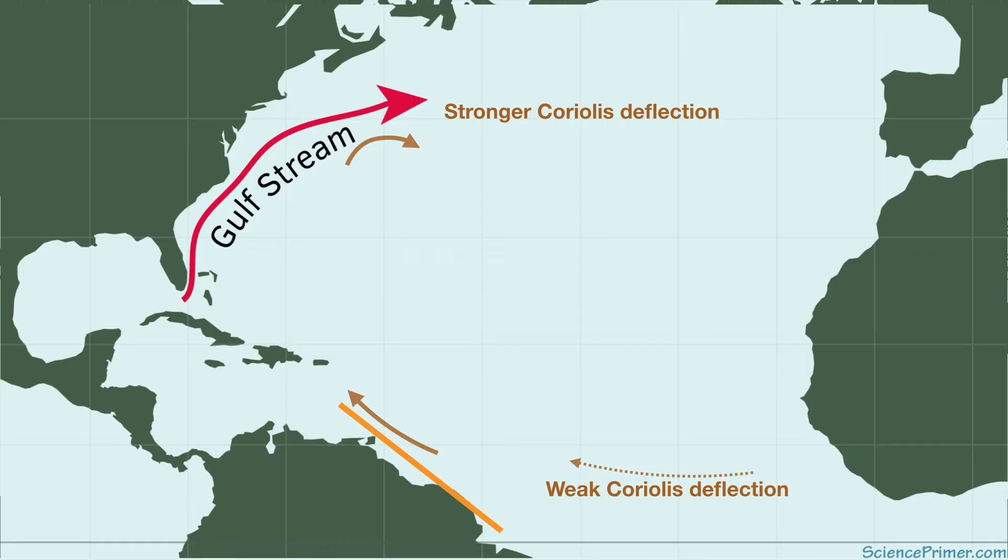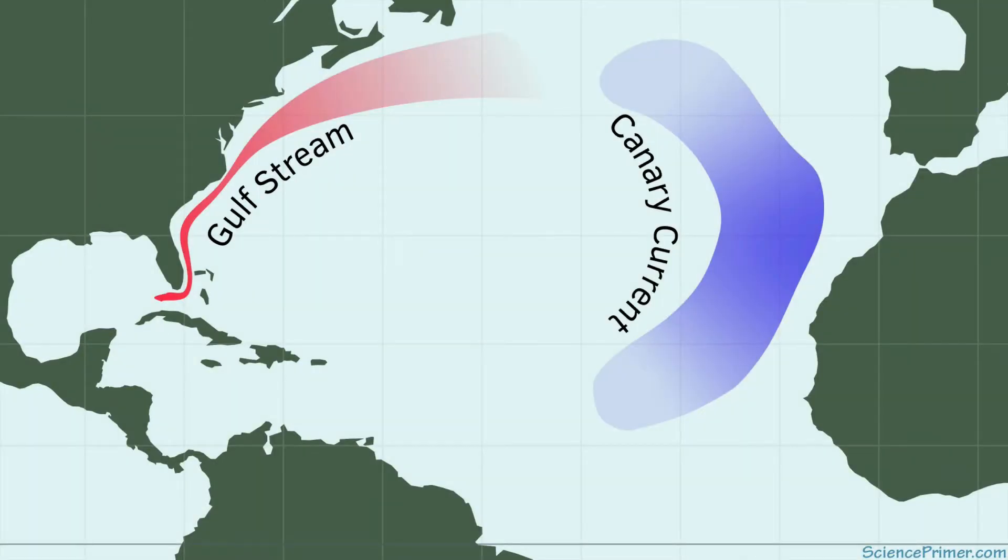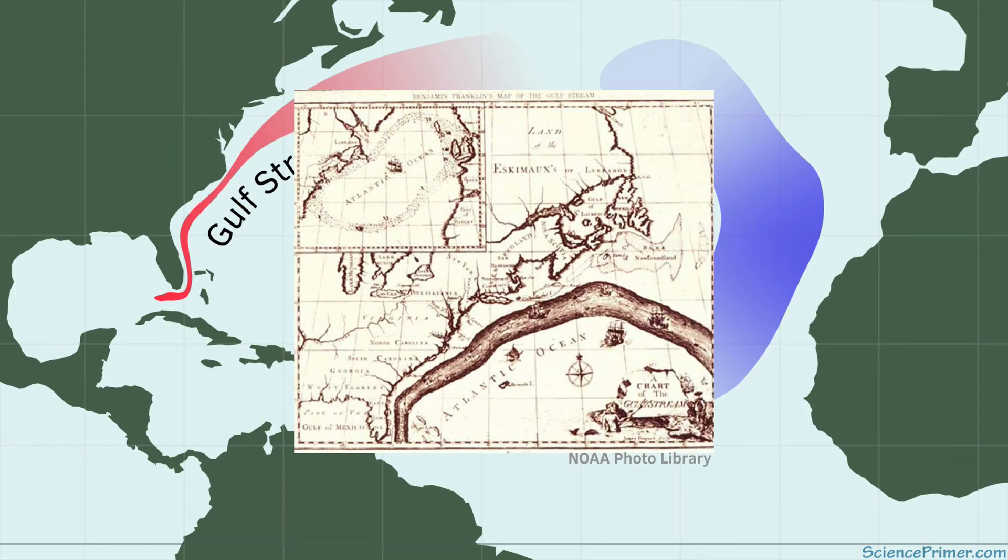So in addition to Coriolis causing the centers of the gyres to shift westward, variations in Coriolis deflection with latitude cause the currents on either side of the basin to differ, with strong concentrated flows of water along the western edge of the basins balanced by slower, more diffuse flows back towards the equator on the eastern side.